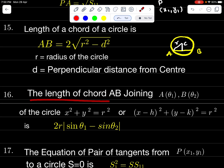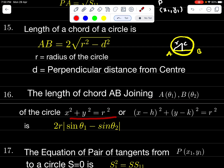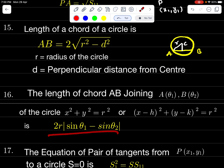The length of the chord AB joining A(θ₁) and B(θ₂) on the circle x² + y² = R² or (x − H)² + (y − K)² = R² is 2R|sin((θ₁ − θ₂)/2)|.